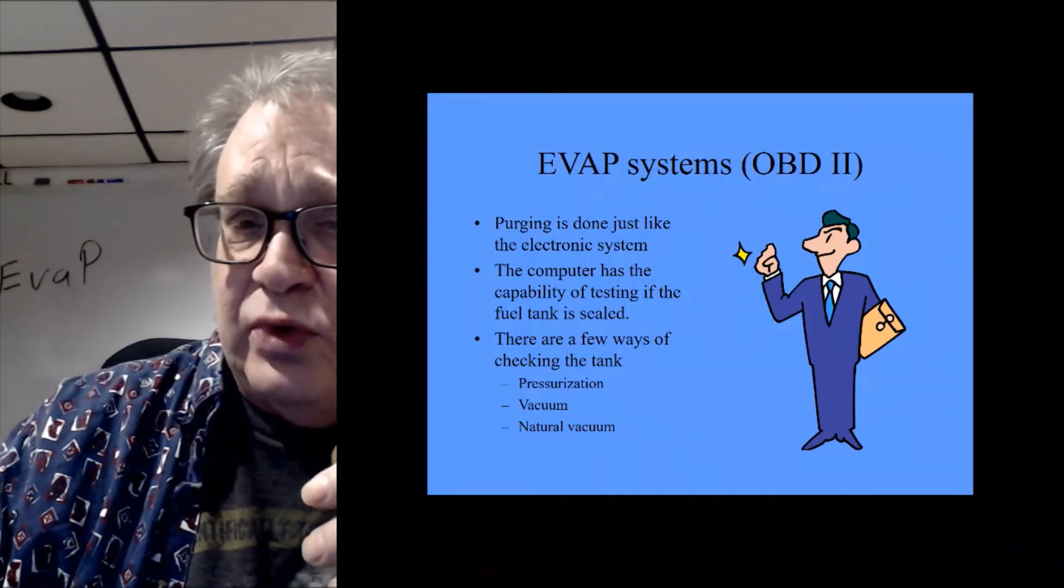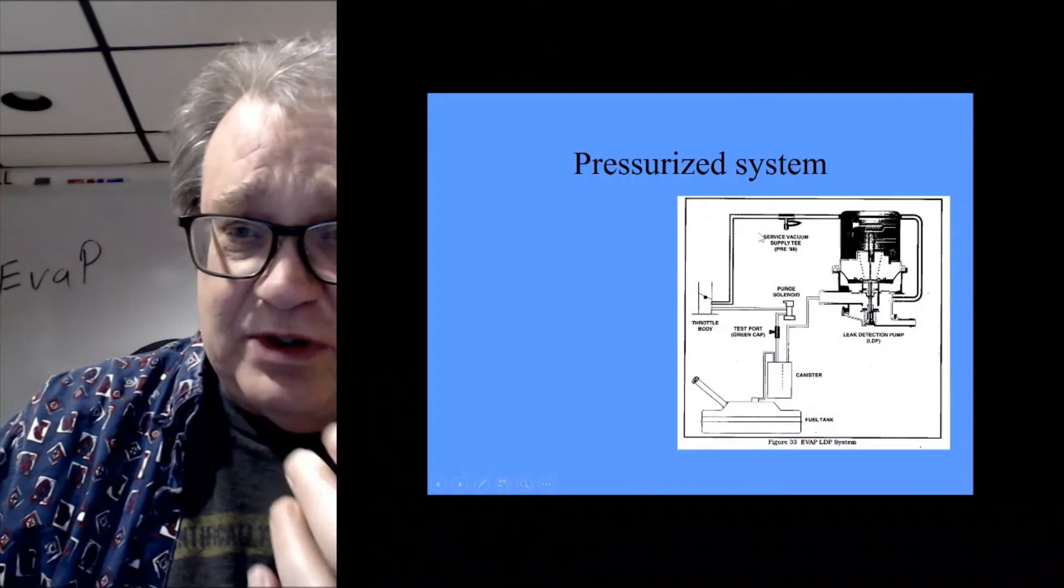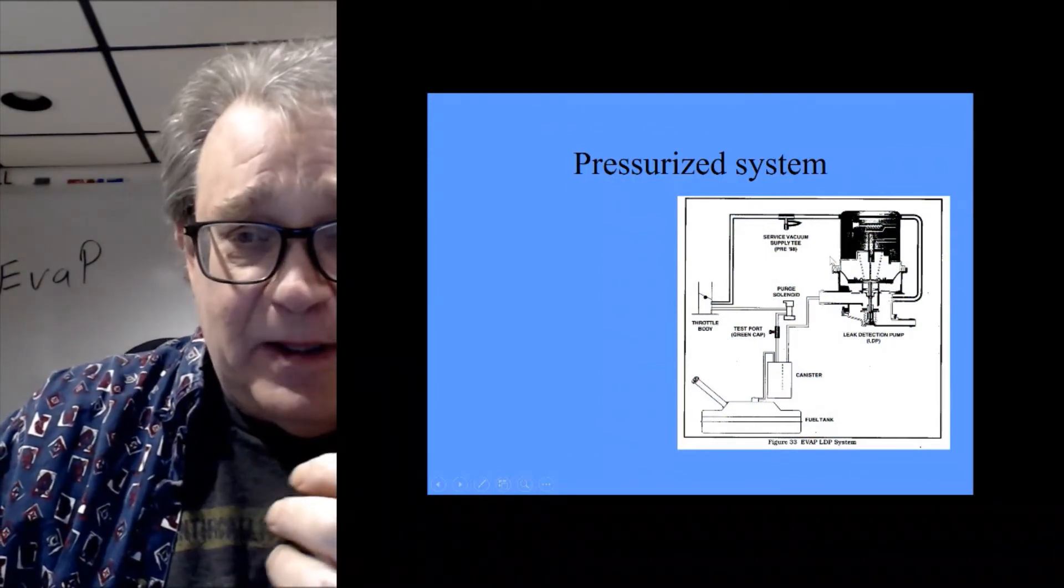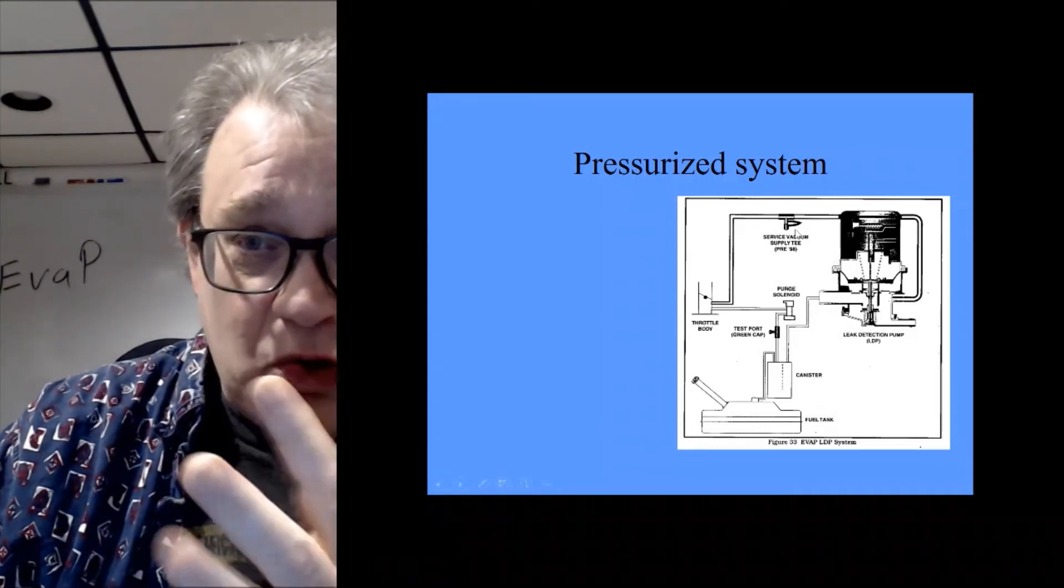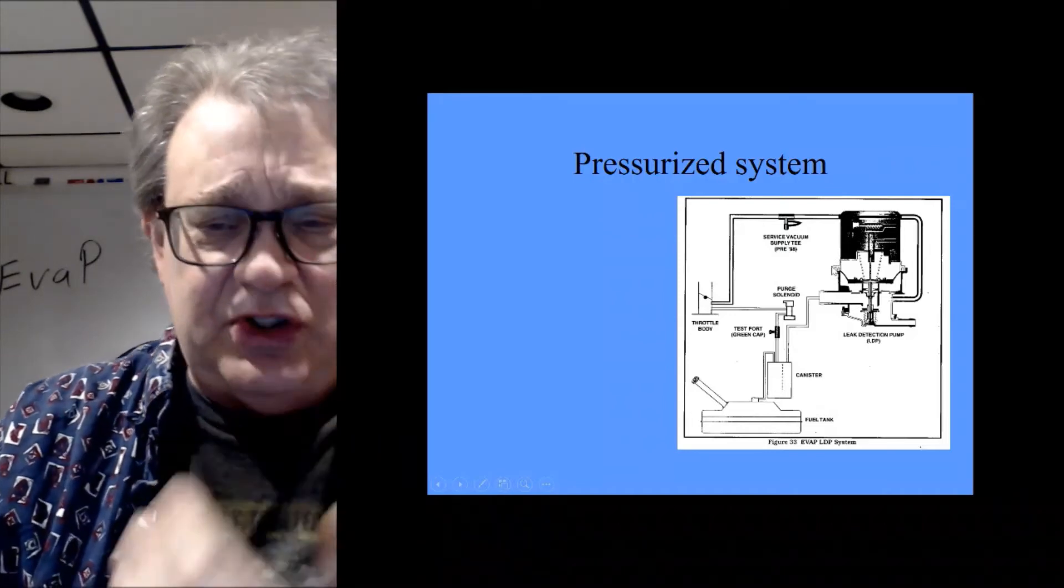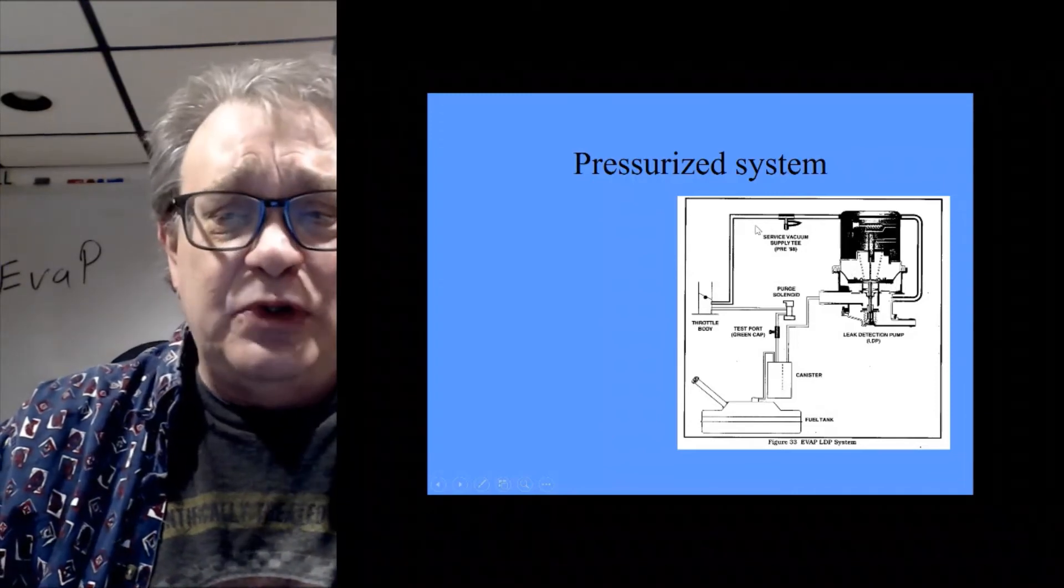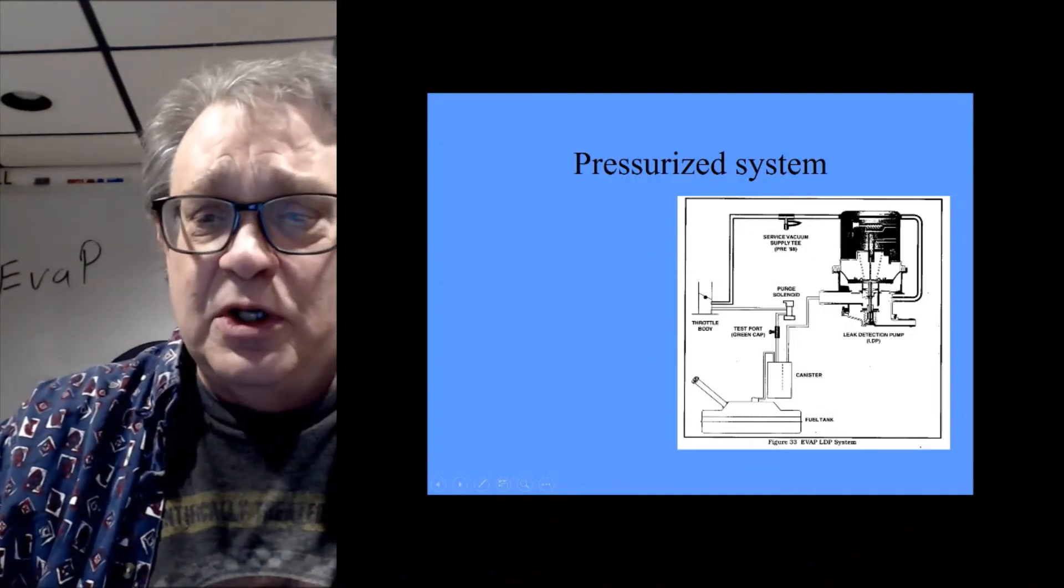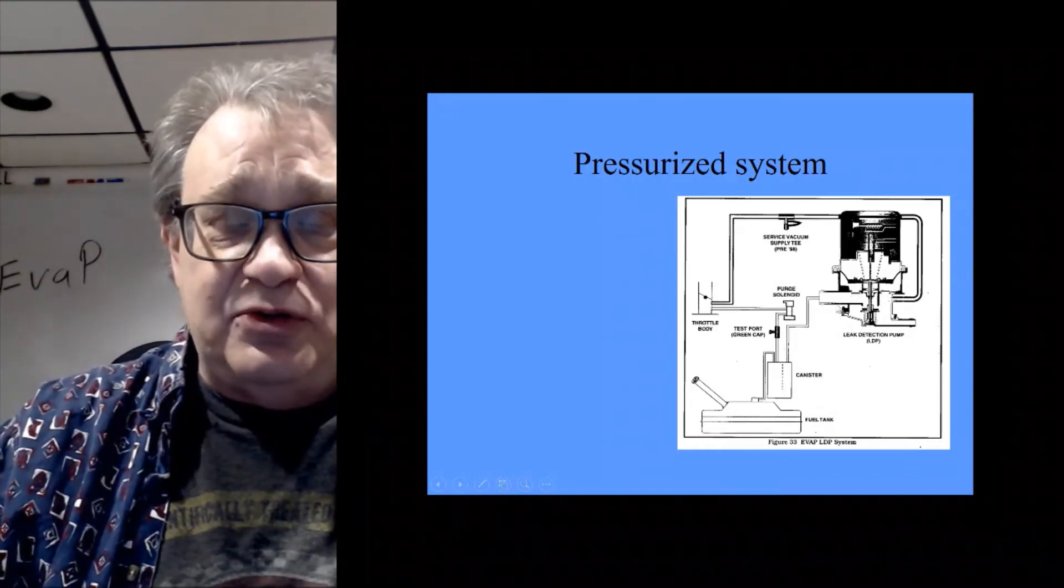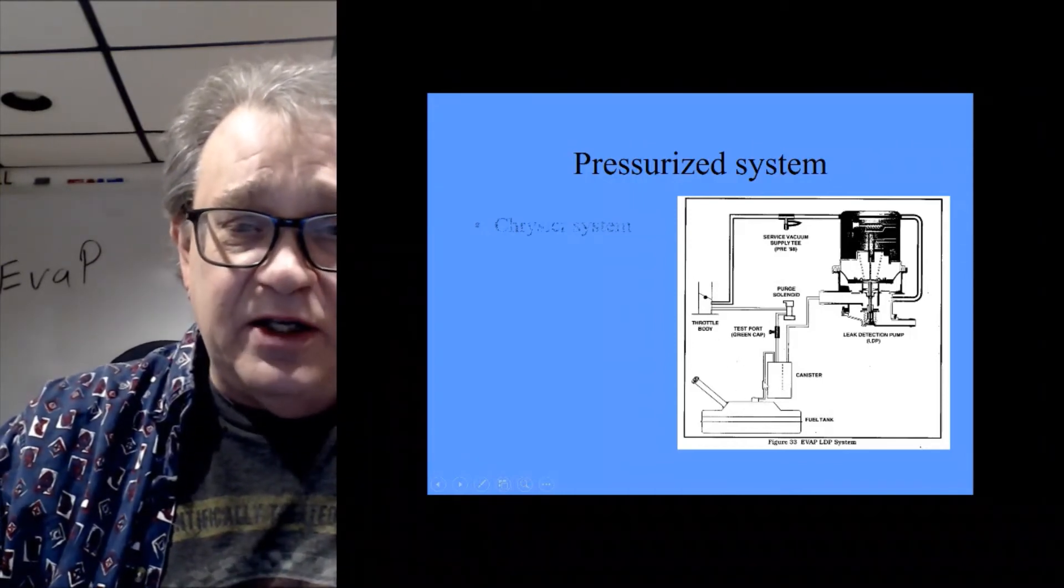Pressurized system, this is one of the very common ones. This is a Chrysler system. It actually has a little pump. I'm gonna see if I can put up a video on it, on how this works, because it makes much more sense if you see it. But basically what it does is, this is a diaphragm, and we're using the engine vacuum to pump this diaphragm up and down, and then there's two one-way valves that allows it to pump pressure into the gas tank.